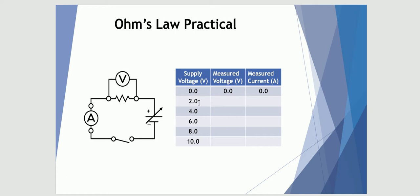We're going to change the variable supply from 0 to 2 to 4 to 6 to 8 to 10 and measure the voltage across the resistor and the current running through the circuit. Here's a set of data that's already been collected for us — let's look at how we can now graphically analyze that.